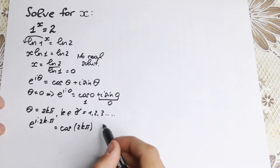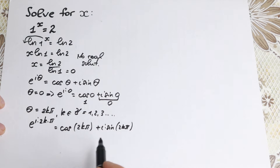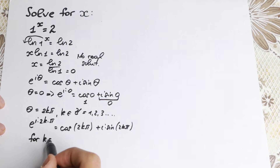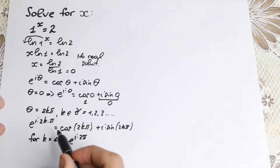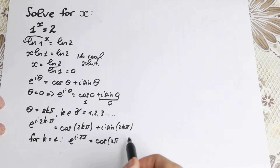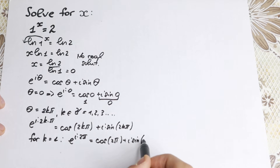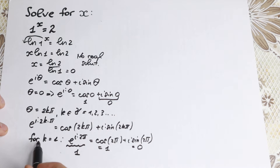So we plug 2k pi instead of theta. For k equal to 1, we have e to the power i times 2 times 1 times pi, which equals cosine 2k pi plus i sine 2k pi. That equals 1 plus i times 0, which equals 1, because cosine and sine are periodic. So this expression equals 1 when k is a whole number.